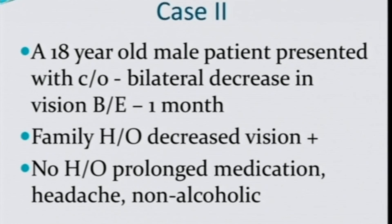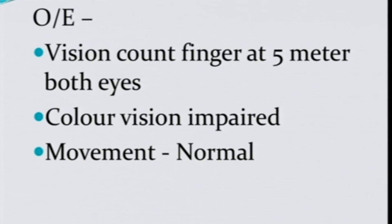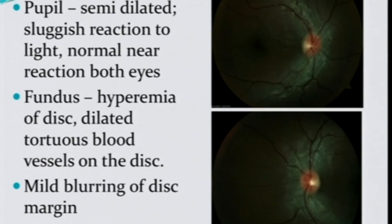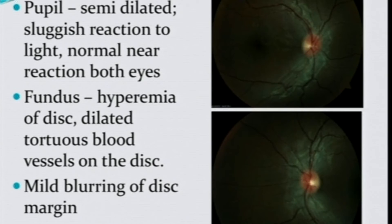The second patient is an 18-year-old male who presented with bilateral decrease in vision for one month. He gave a family history of visual loss on the maternal side — his maternal uncle also had loss of vision at the same age. On examination, he had severe decrease in visual acuity, impaired color vision, sluggishly reacting pupils, and the fundus showed hyperemia of the disc with dilated telangiectatic blood vessels over the disc and in the peripapillary area, with mild disc blurring and temporal pallor.